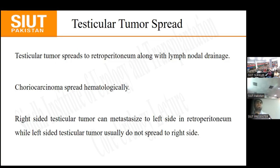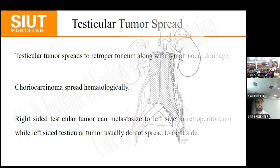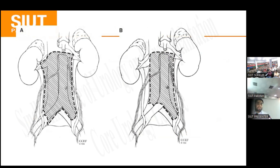The cisterna chyli is the collection point for all body lymphatics, located at the level of L1 and L2. Lymphatics drain into the cisterna chyli, then into the thoracic duct, and ultimately into the subclavian vein.